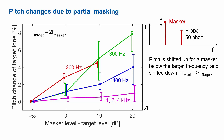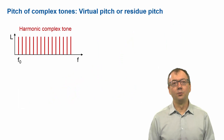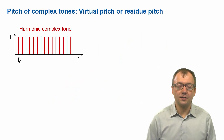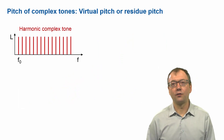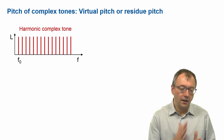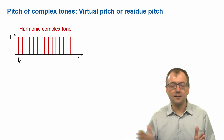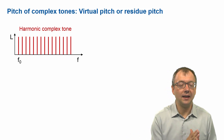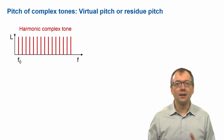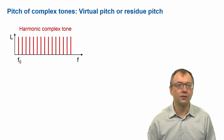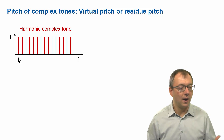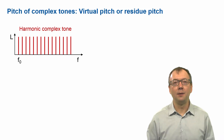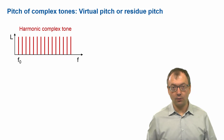So far we talked about the pitch of single spectral lines, of single tones. With musical instruments, of course, we have harmonic complex tones, where there are multiple harmonics related to a fundamental frequency F0. Those harmonics are multiples of F0 — twice the fundamental frequency, three times, and so on.